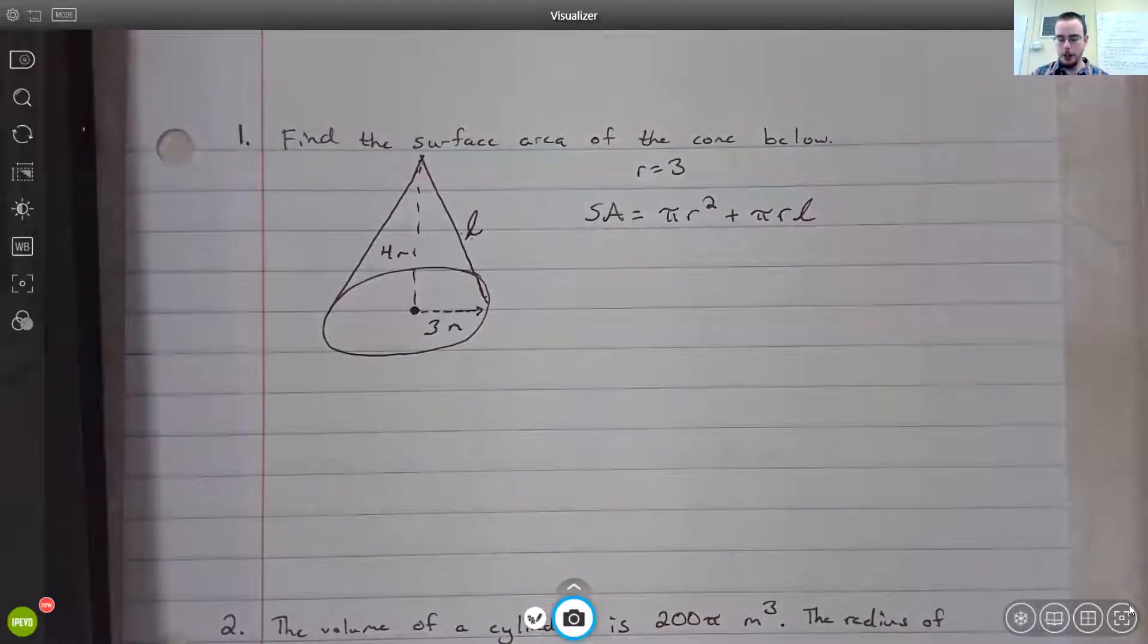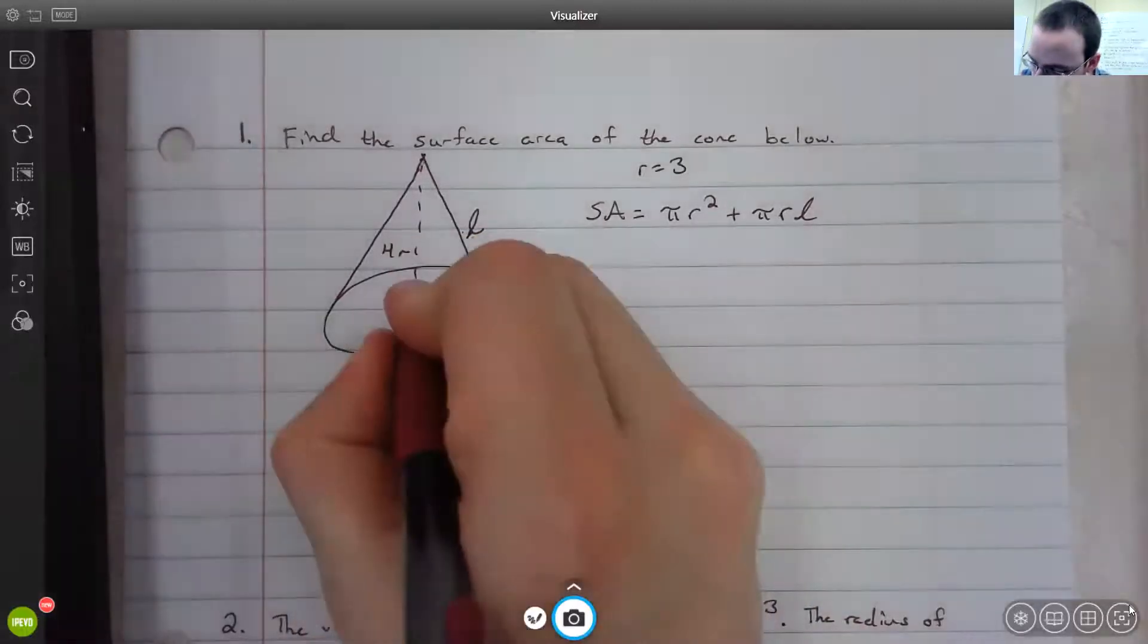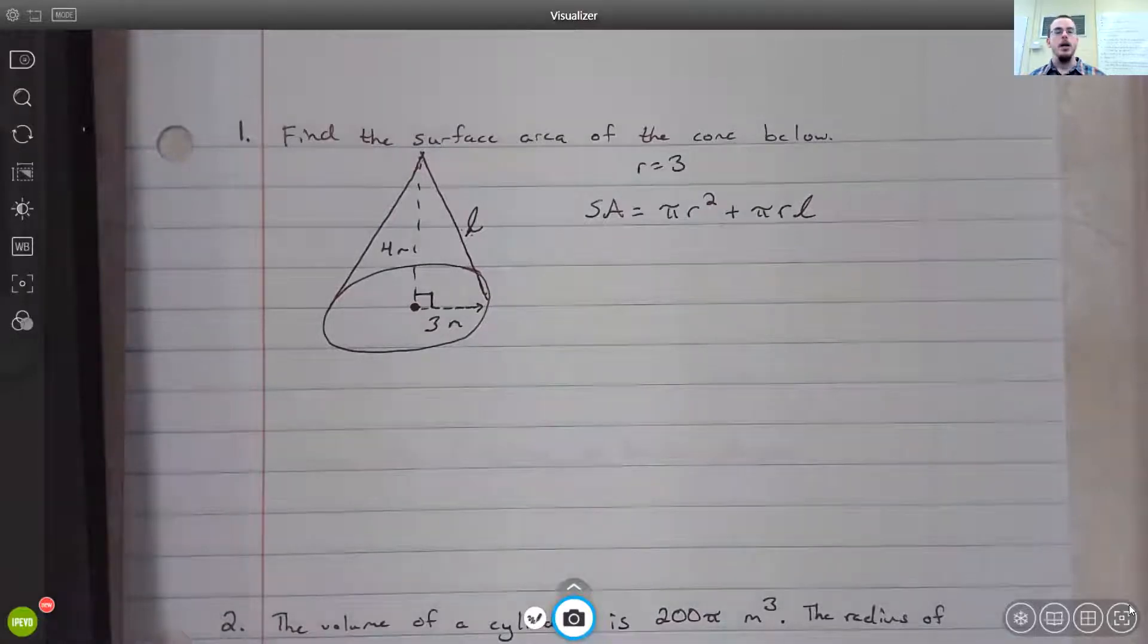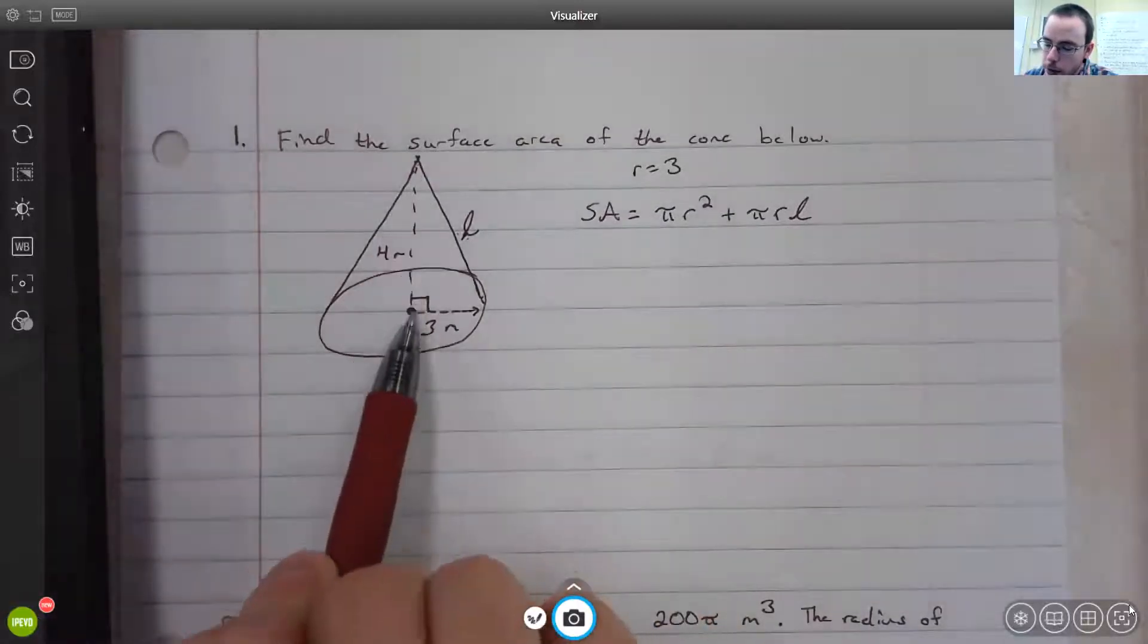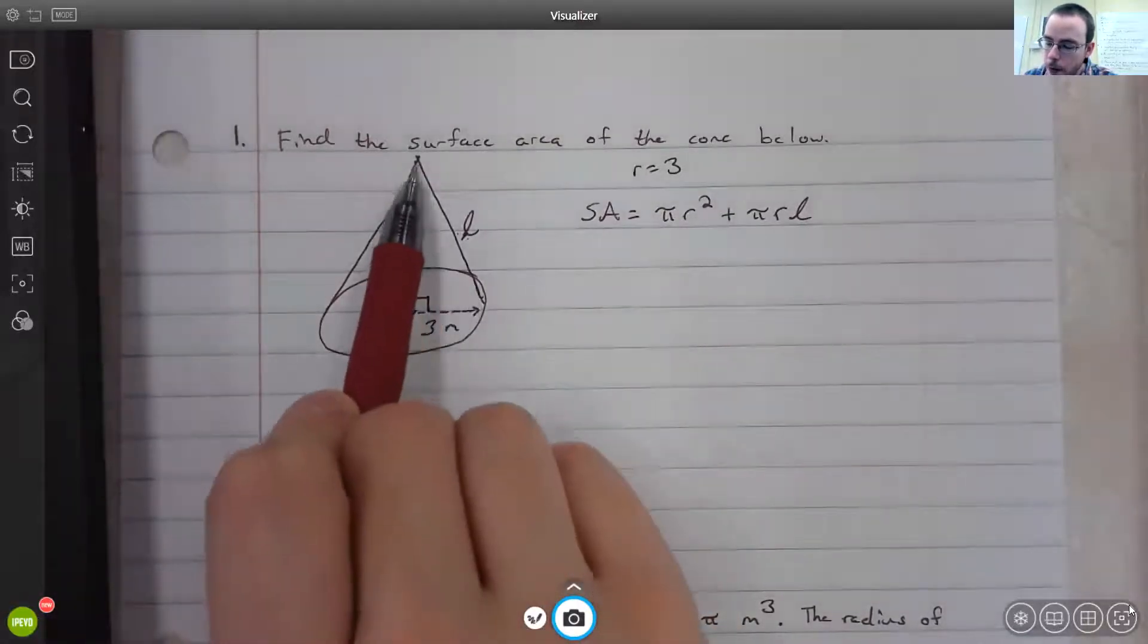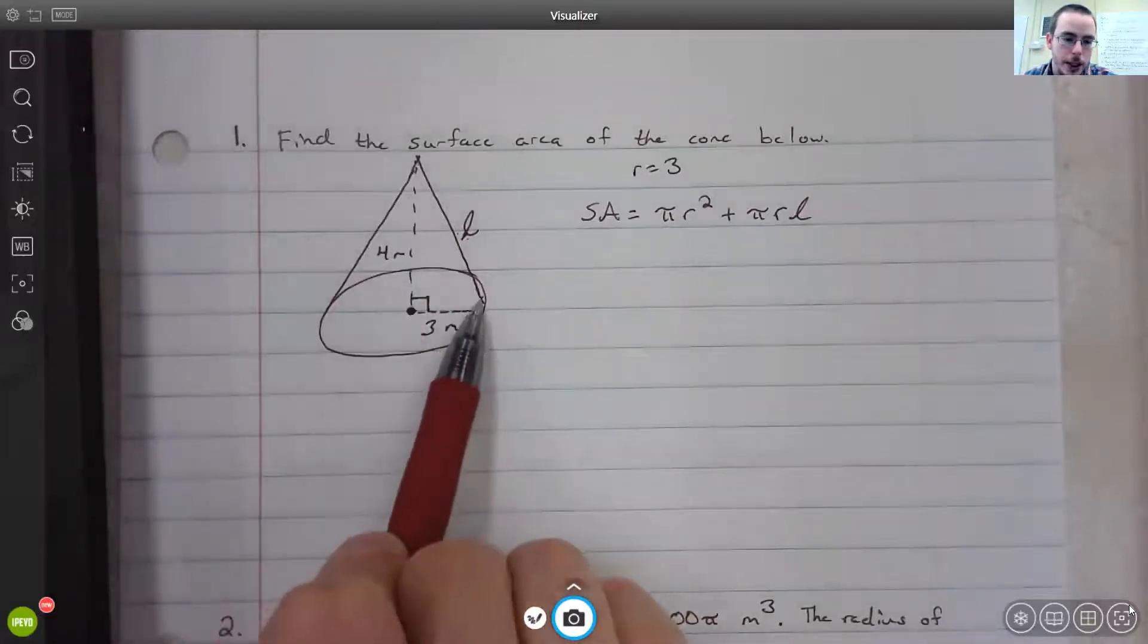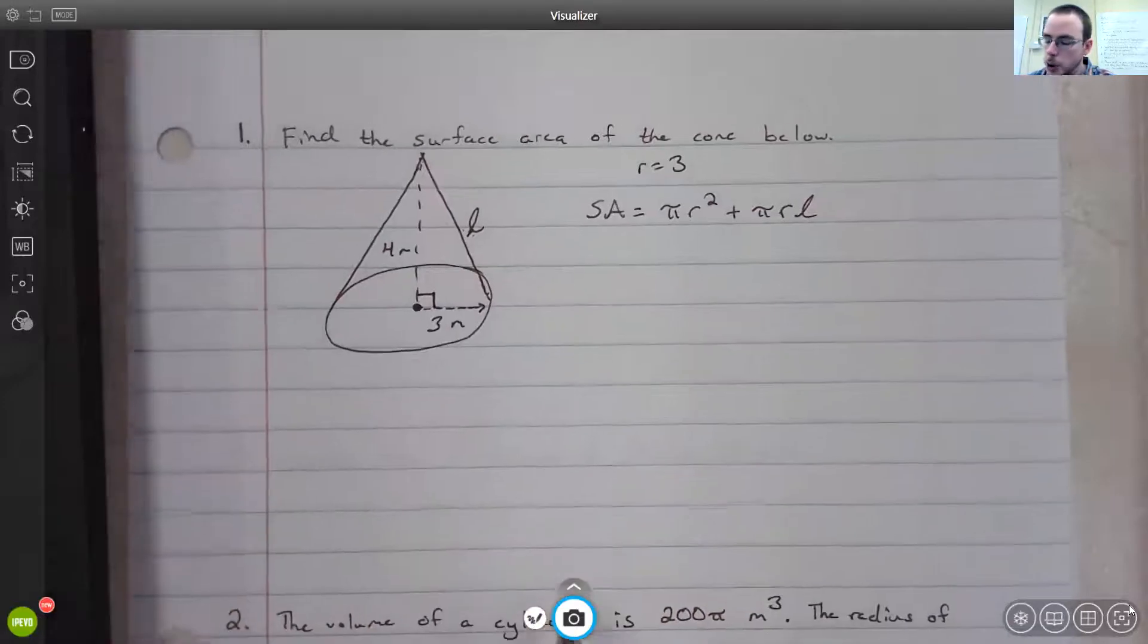When we talked about cones, we talked about the fact that the height and the radius of cones intersect at a right angle. This angle here is a right angle, and that's actually going to help us figure out what the slant length is because do you notice what shape we have here now? We have a right angle here and a three-sided figure, so we have a right triangle.